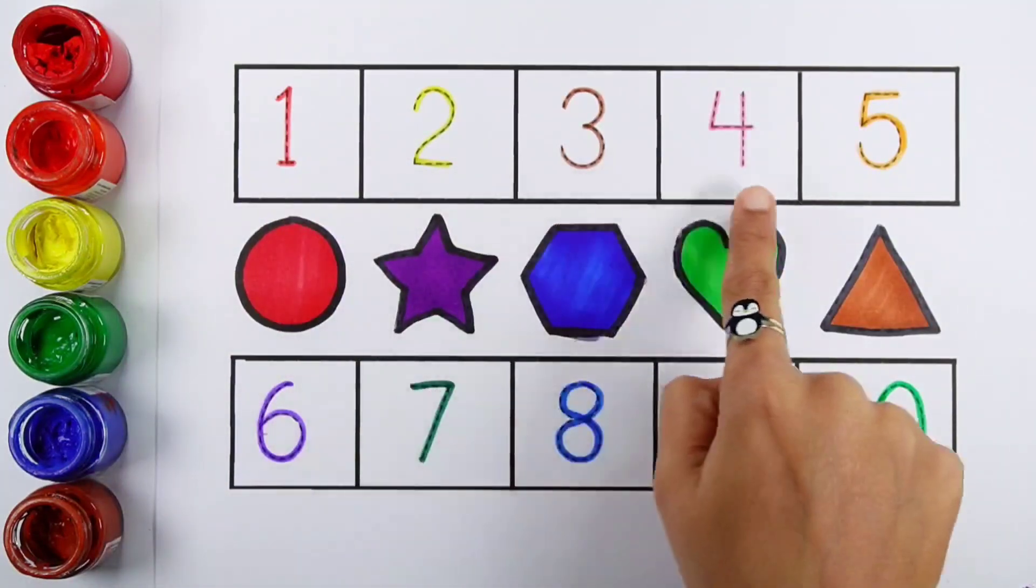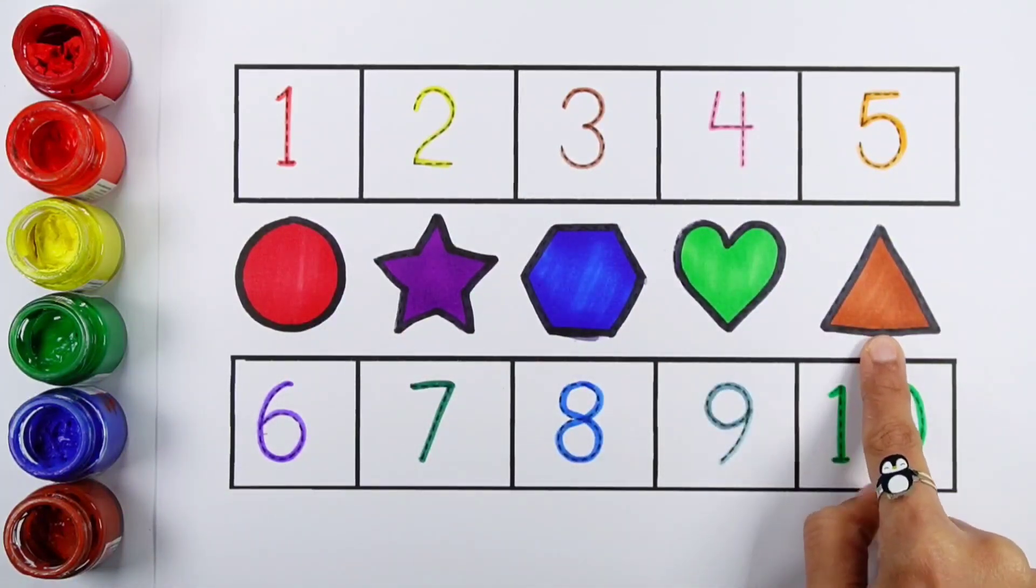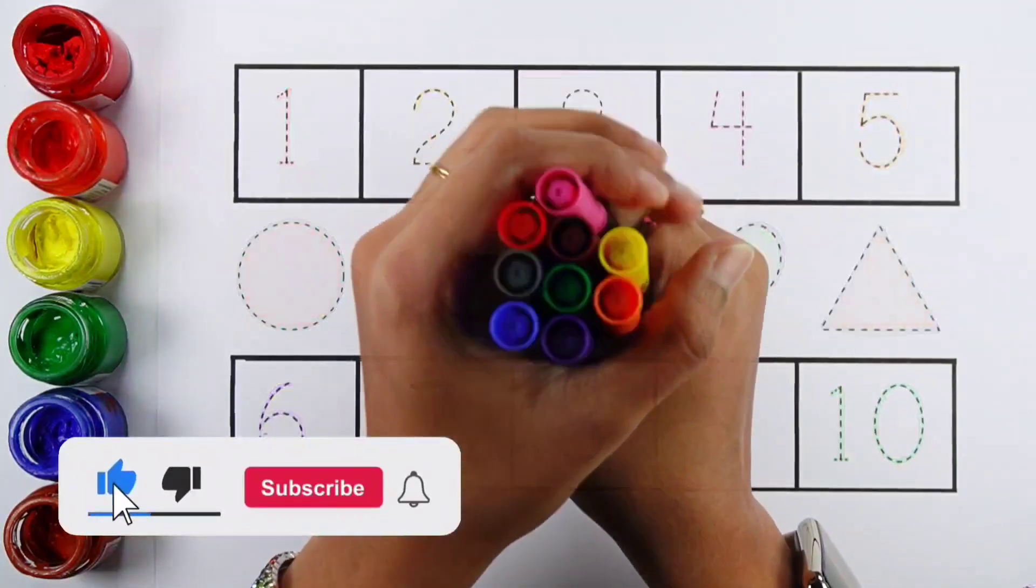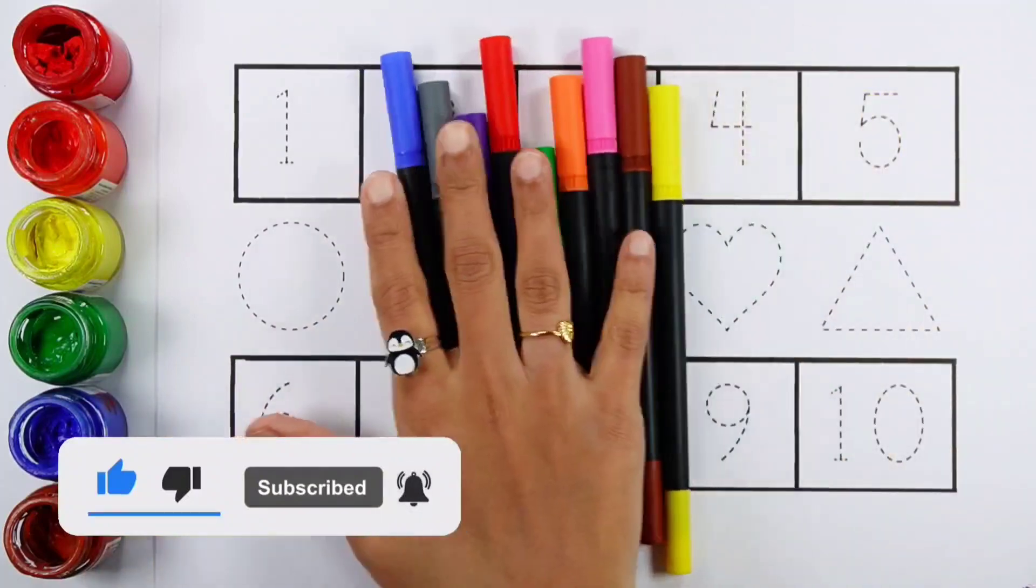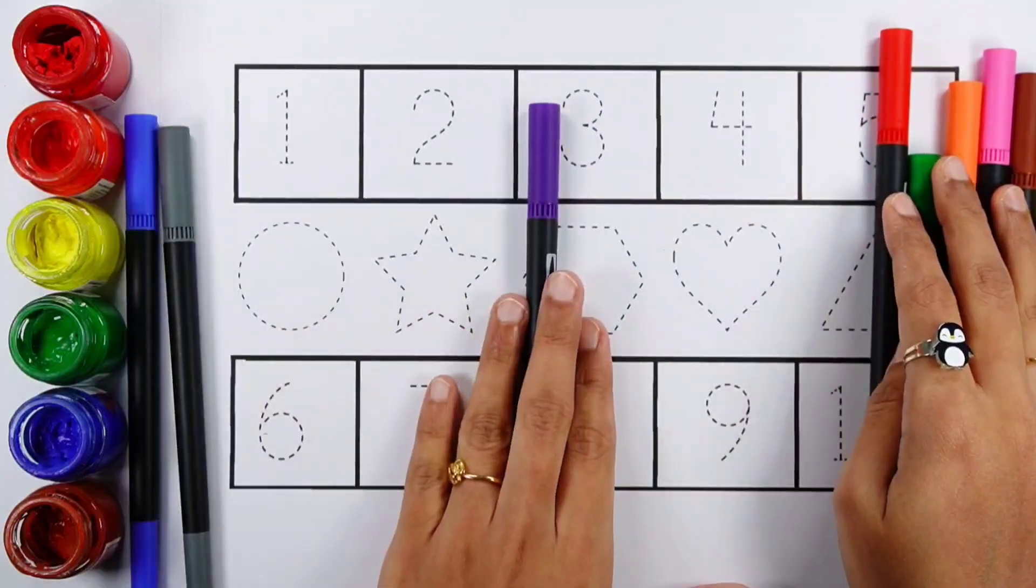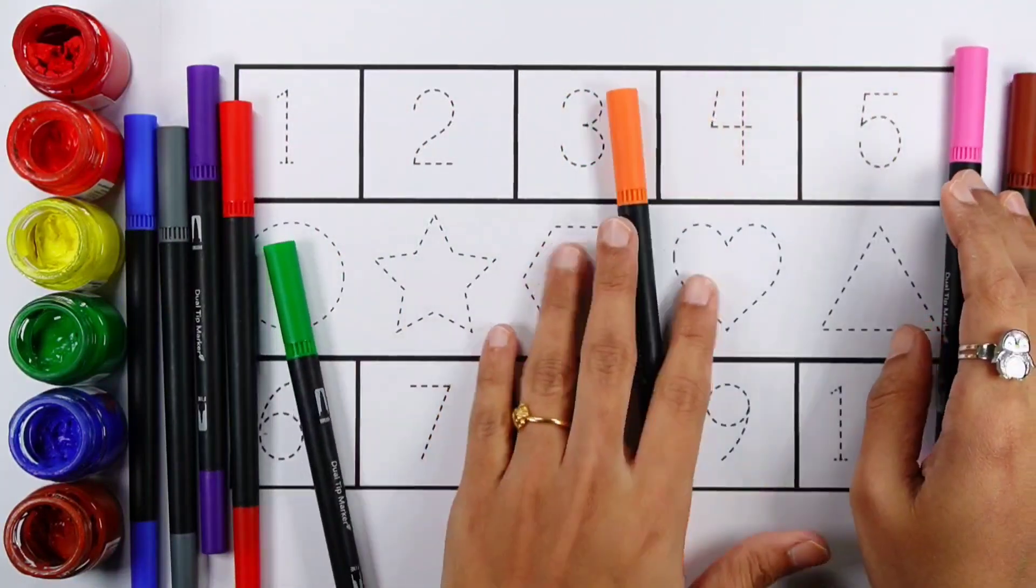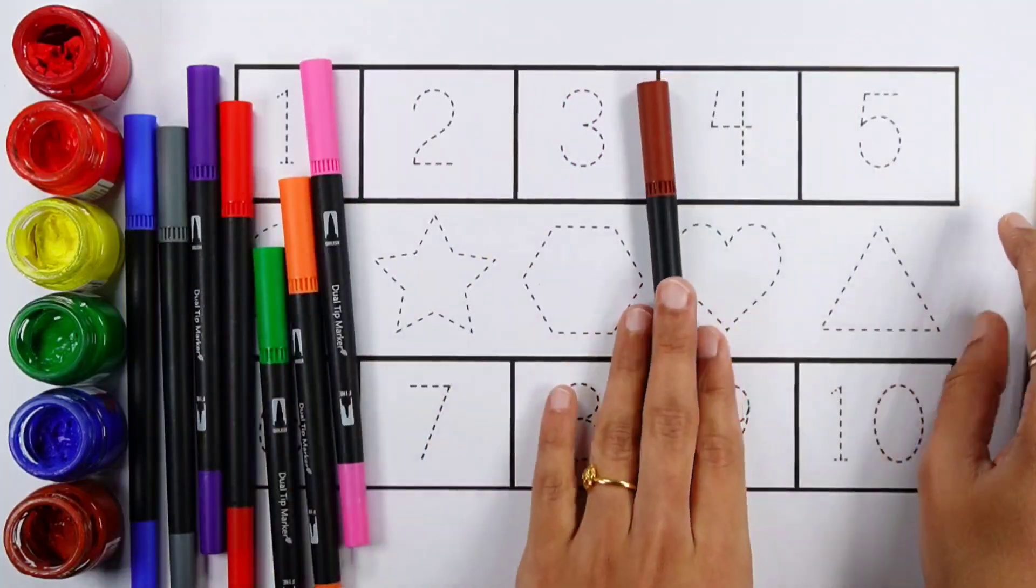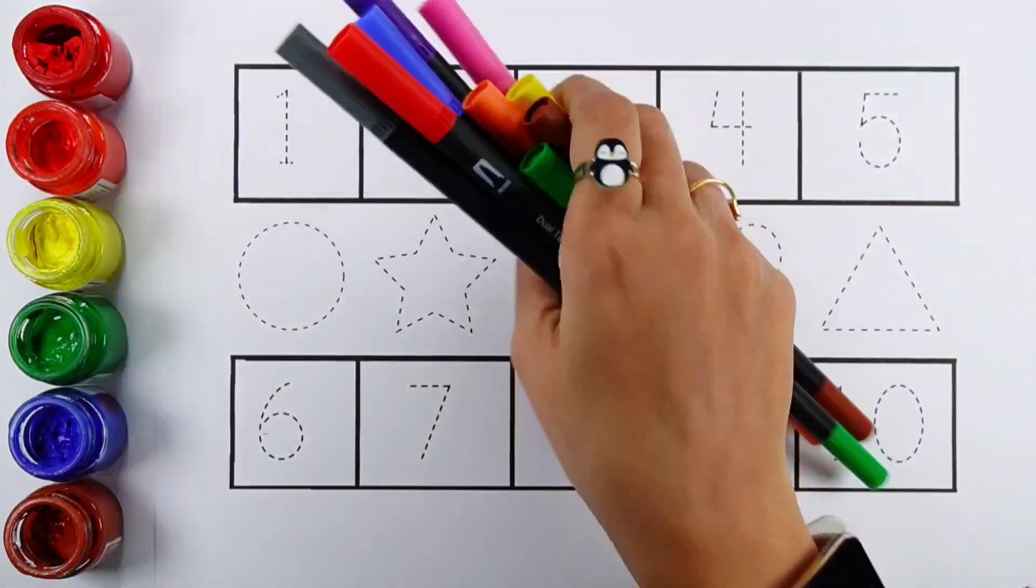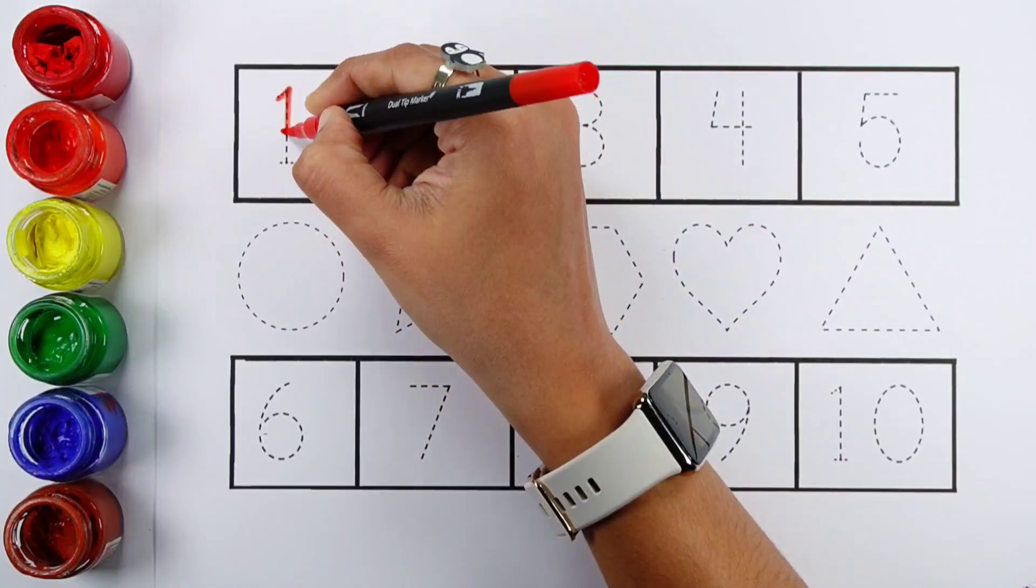Four, five, circle, star, hexagon, heart, triangle, six, seven, eight, nine, ten. Let's learn some colors. Blue color, gray color, violet color, red color, green color, orange color, pink color, brown color, yellow color. One.